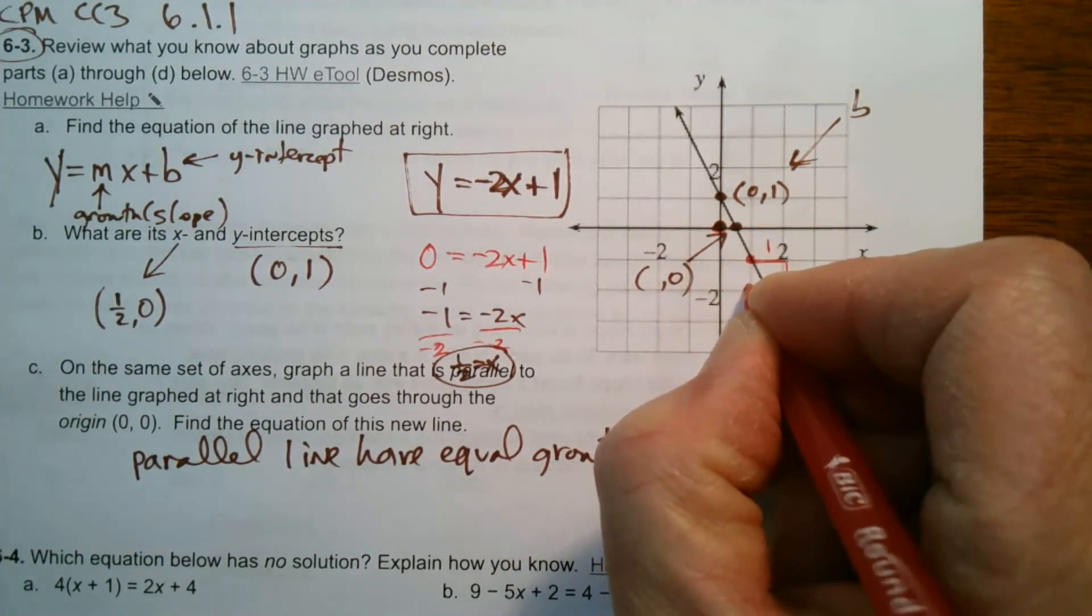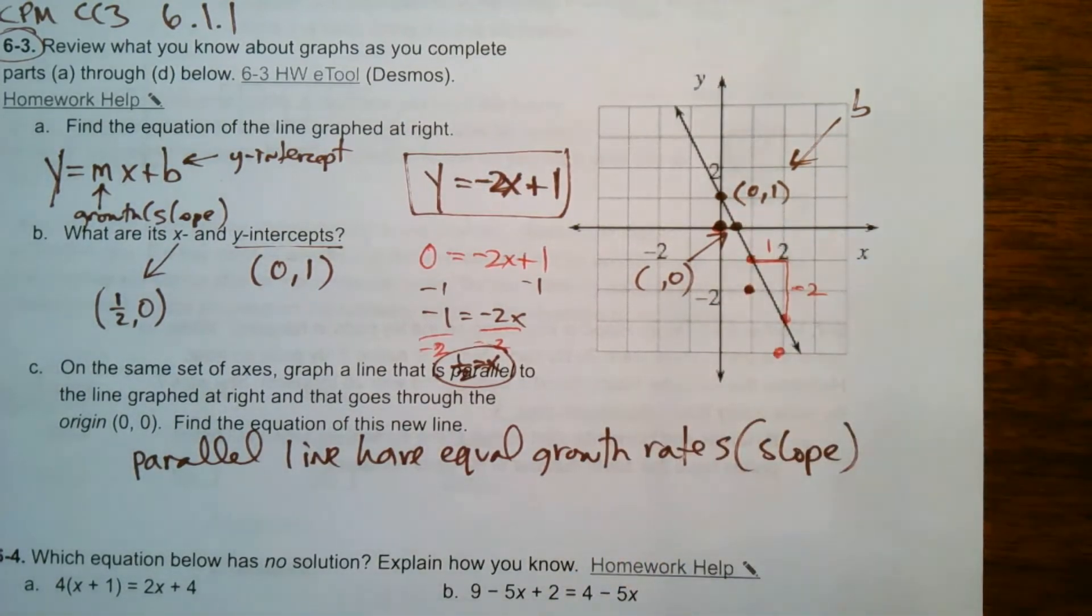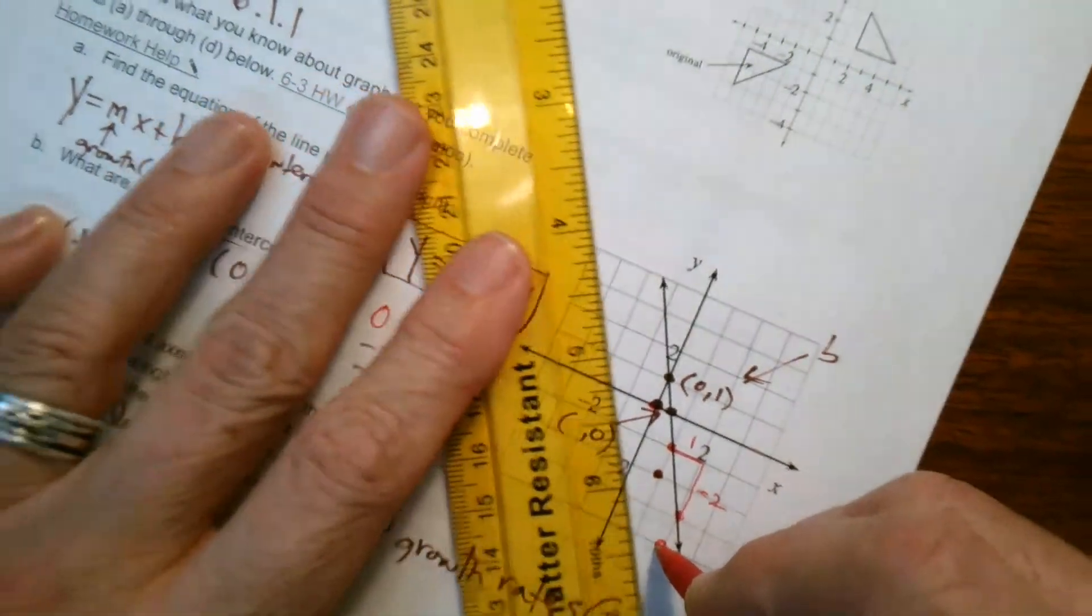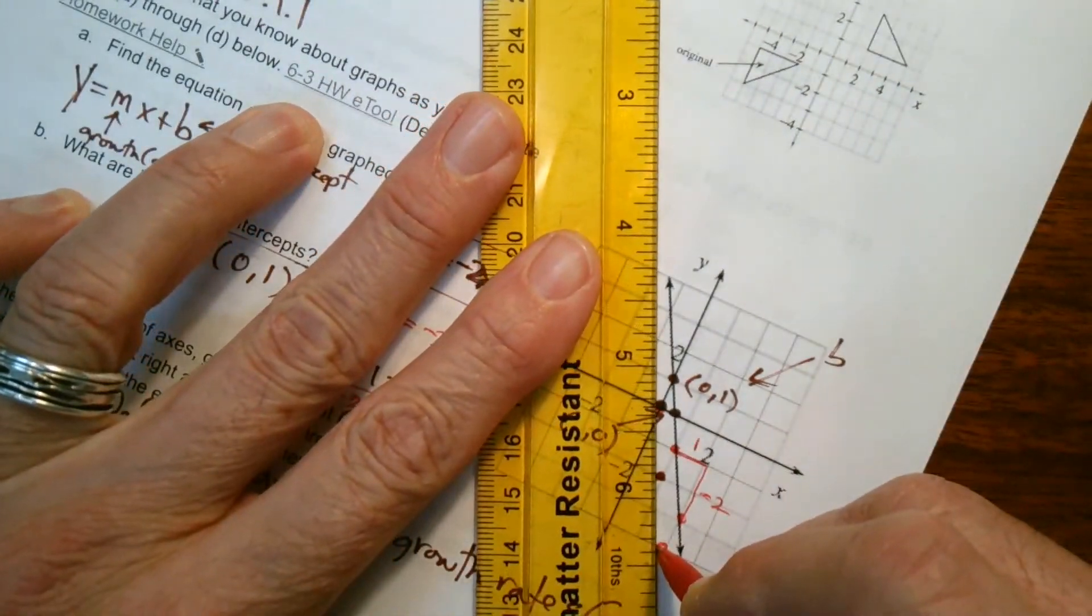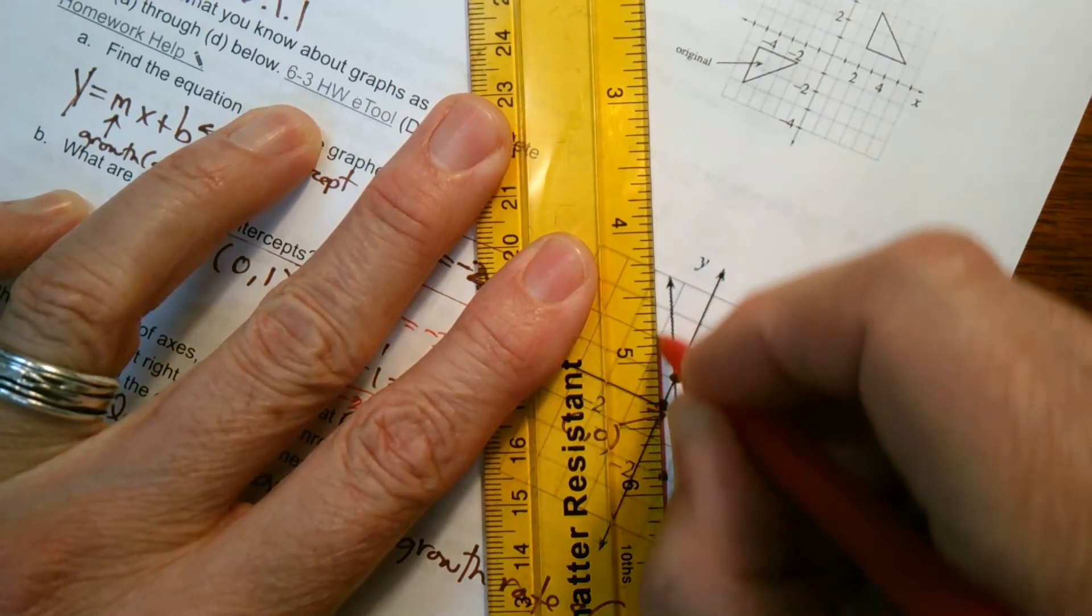Every 1 over, I go down 2. Every 1 over, I go down 2. So if you notice, that line has that exact same growth rate going through 0, 0, it would be parallel to it, right? So right there.